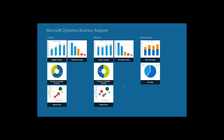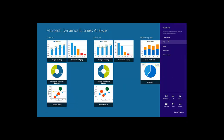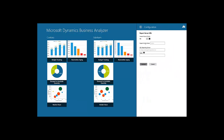For more details about prerequisites or report deployment, please refer to the User Manual or TechNet Articles. So now let's go ahead and configure our Microsoft Dynamics Business Analyzer. Navigate to the Settings charm on the right-hand side and choose Configuration.